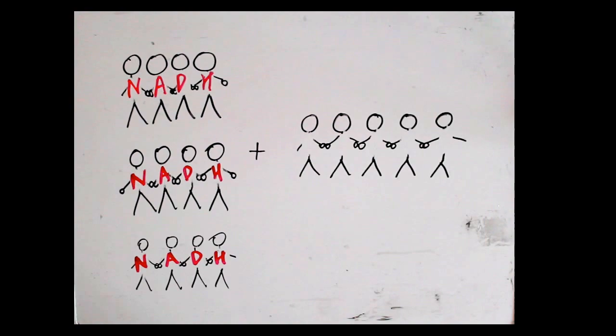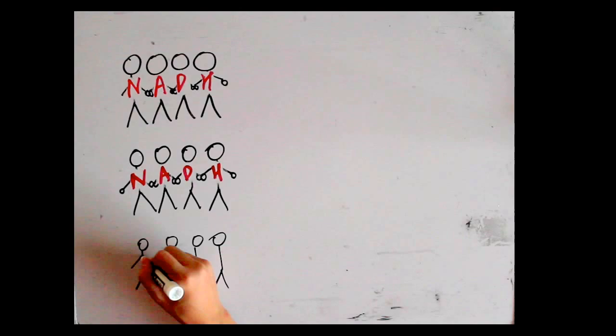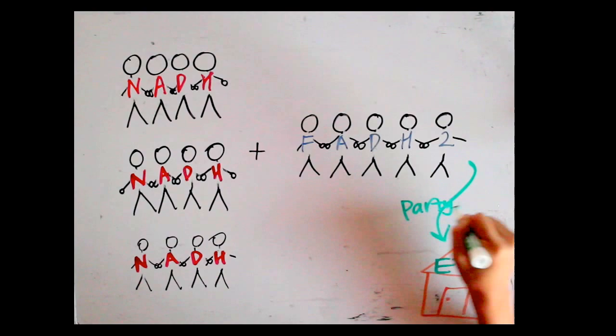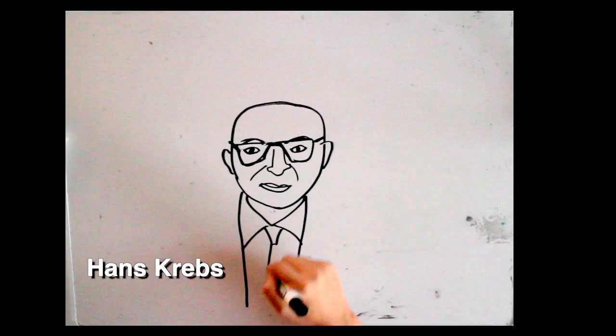Which later goes to the ETC. Oh, Krebs cycle, Krebs cycle: 3 NADH, 1 FADH2 creation, and the synthesis of 1 ATP.